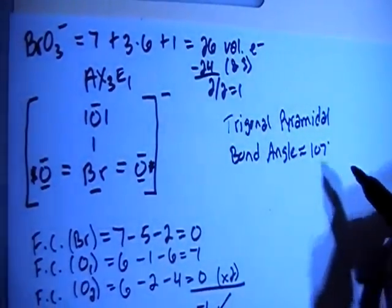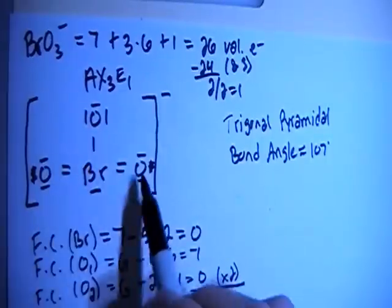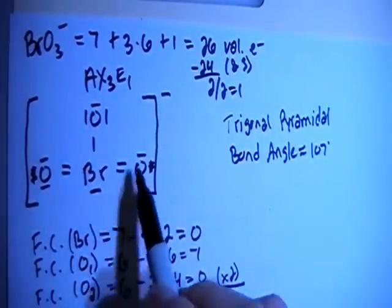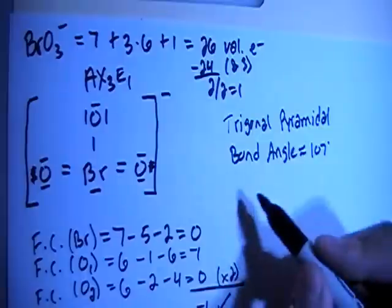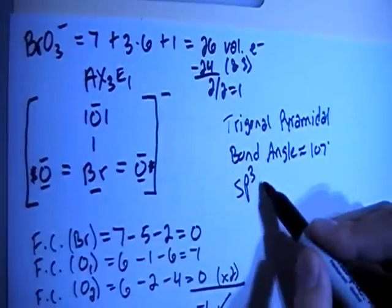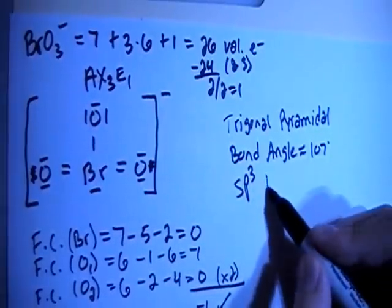Now, in terms of hybridization, you have the central atoms surrounded by one, two, three peripheral atoms as well as one non-bonding pair. So there's one, two, three, four electron groups. So S, P, three, one S, and three P's. So those are four orbitals, so S, P, three hybrid.